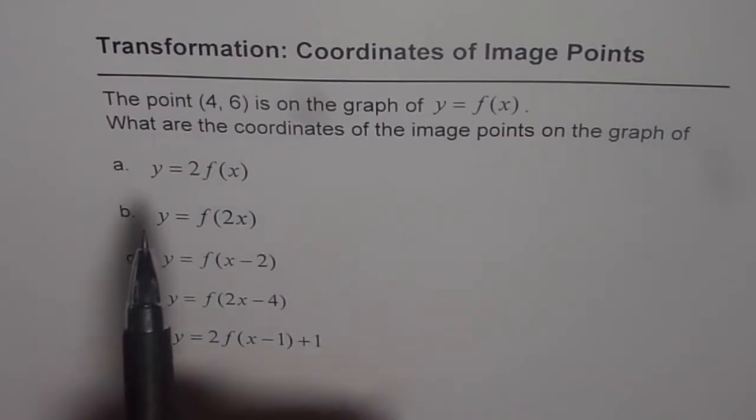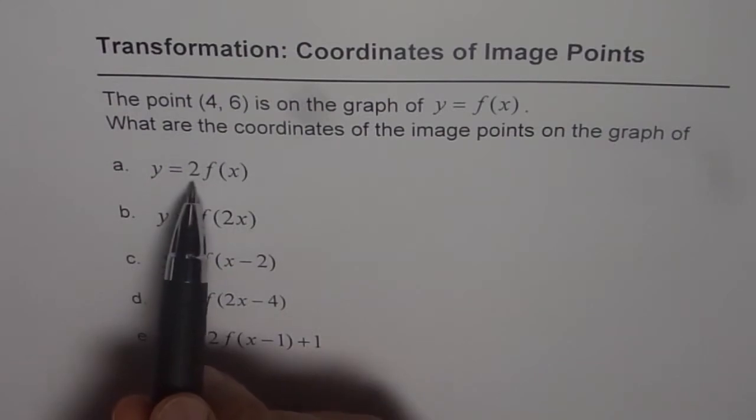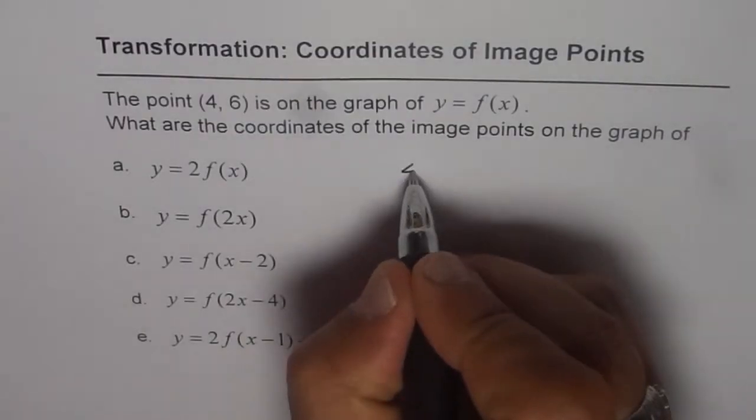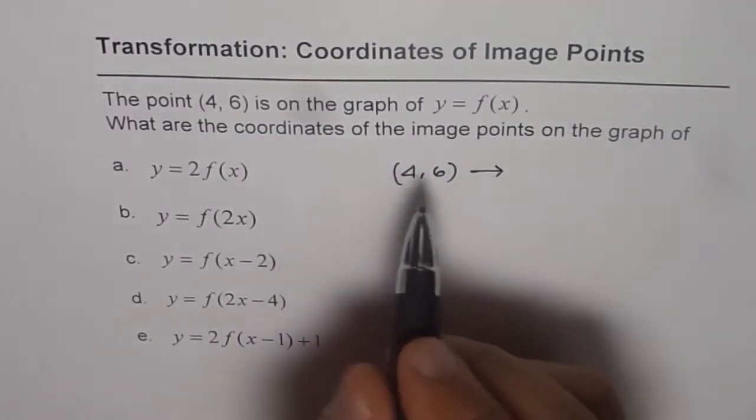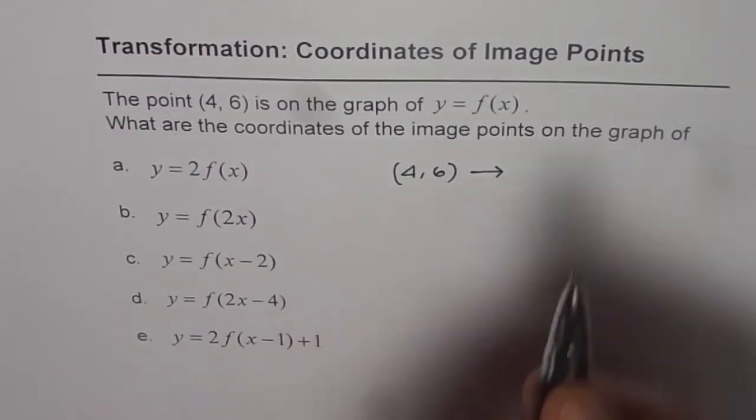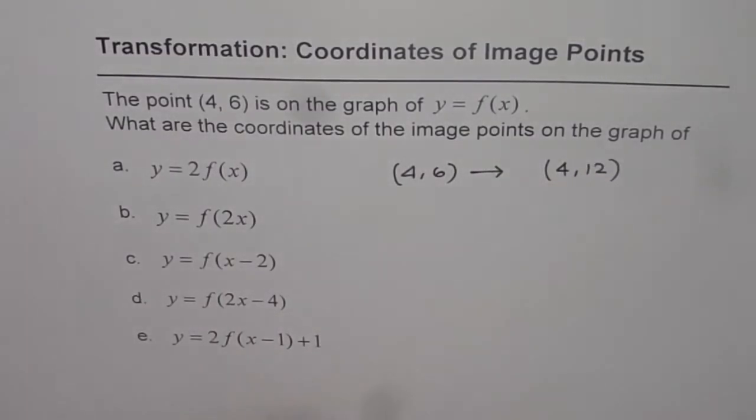In the first one, y = 2f(x), the transformation is a vertical stretch by a factor of two. Vertical stretch will only affect the y-coordinate. So the transformation is from (4, 6) - the y-coordinate gets multiplied by two - so it would be (4, 12). That is the transformation.